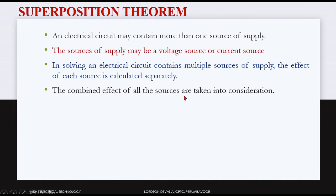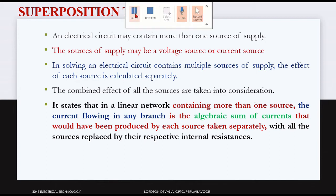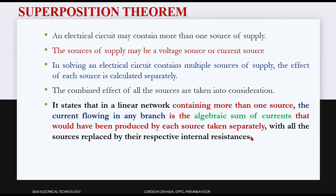The combined effect of all the sources are taken into consideration. It states that in a linear network containing more than one source, the current flowing in any branch is the algebraic sum of currents that would have been produced by each source taken separately, with all the sources replaced by their respective internal resistances.